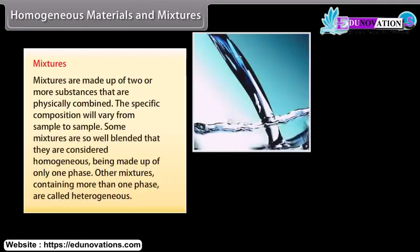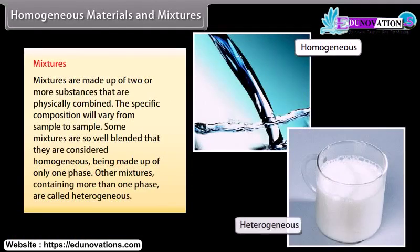Mixtures are made up of two or more substances that are physically combined. The specific composition will vary from sample to sample. Some mixtures are so well blended that they are considered homogeneous, being made up of only one phase. Other mixtures containing more than one phase are called heterogeneous.